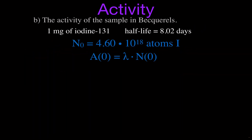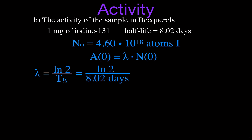Using that information and our activity equation, we can figure out the activity. The activity at time zero is equal to the decay constant times the number of radioactive nuclei we have at that initial time. N0 equals 4.6 times 10 to the 18 atoms. Now we need to figure out the decay constant. The decay constant is simply calculated as the natural log of 2 divided by the half-life of the material, and we were given that the half-life is 8.02 days. When we figure out the activity in Becquerels, it needs to be in seconds — decays per second — so we have to convert days into seconds: 8.02 times 24 hours times 60 minutes times 60 seconds.